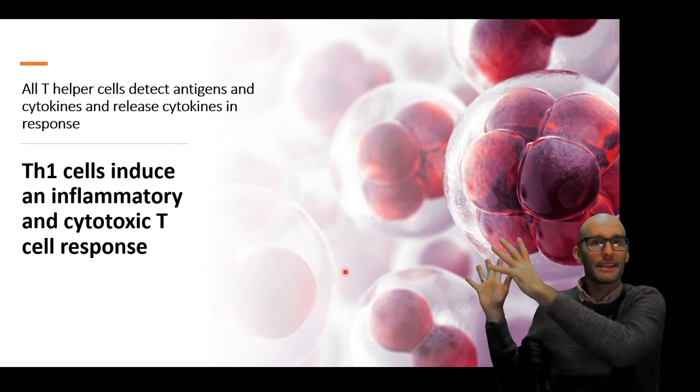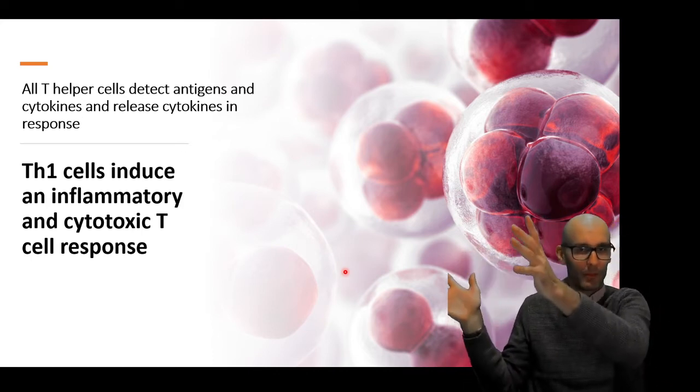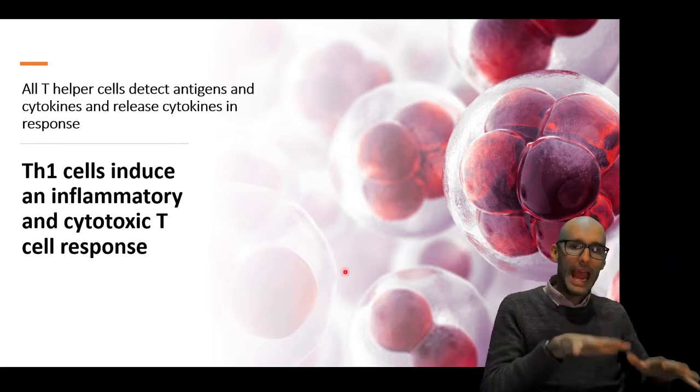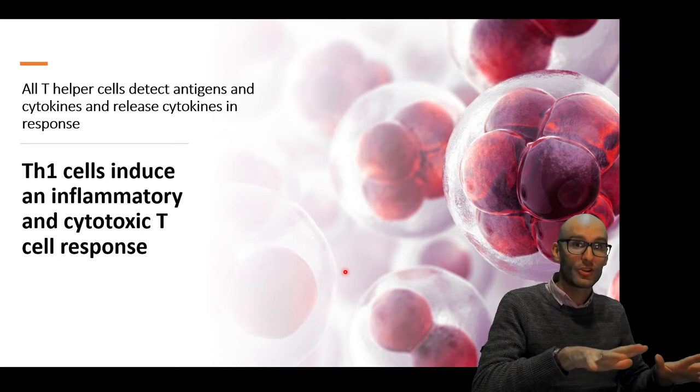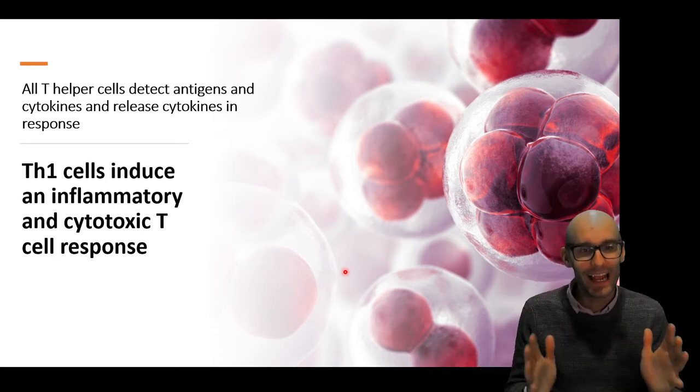And then they release cytokines in response to that. So they collate the information of antigens and cytokines. And then they translate it into the production of a new cytokine. And these cytokines regulate the immune response. So really, they're taking in the information from the body, what kind of pathogen is it? Is it inflammatory? What cytokines are being released? Now I'm going to coordinate the response based on that by secreting a bunch of cytokines. And that's what T helper cells do.